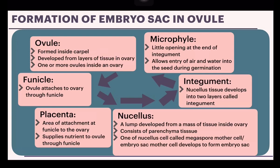The nucellus is developed from a mass of tissue inside the ovary and consists of parenchyma tissue. One of the nucellus cells called the megaspore mother cell, or embryo sac mother cell, develops to form the embryo sac.